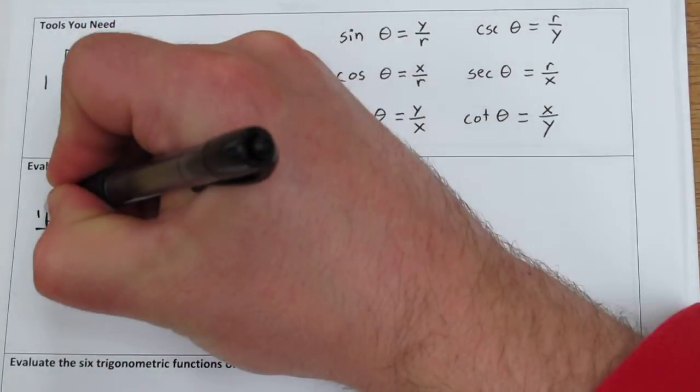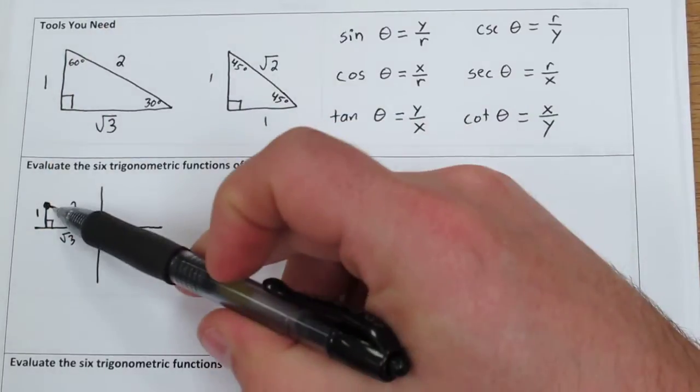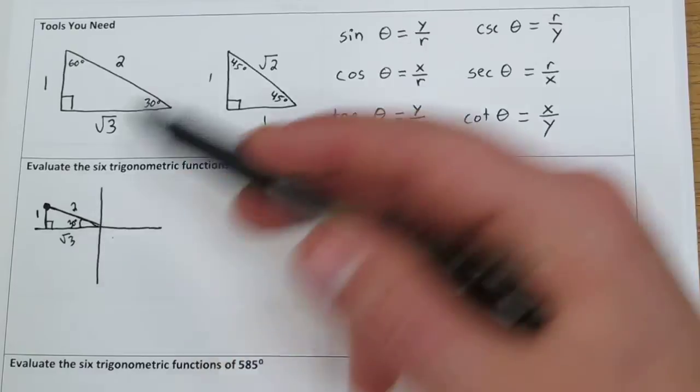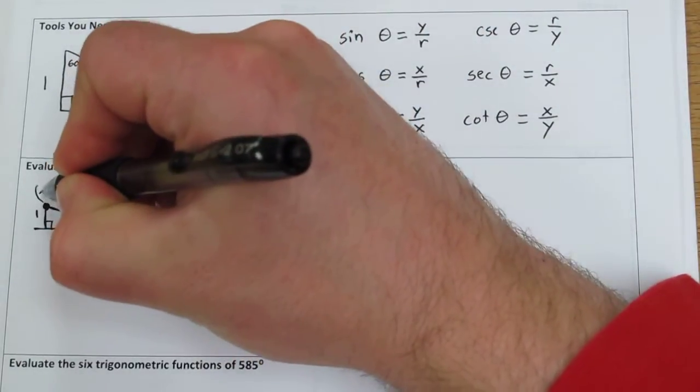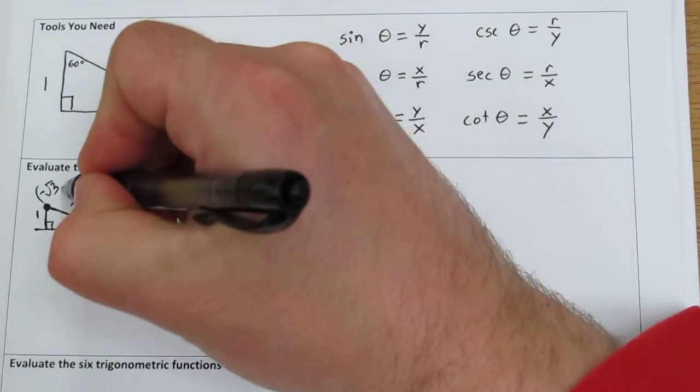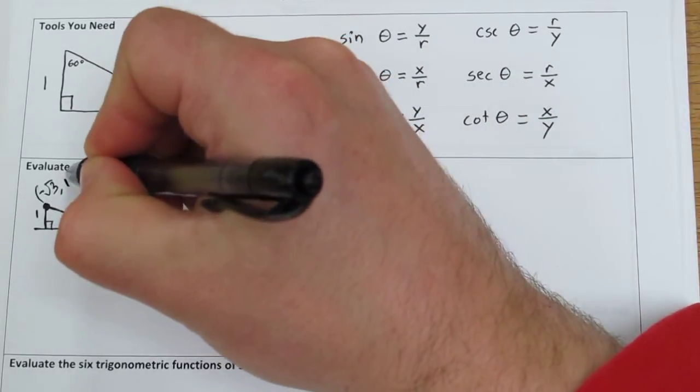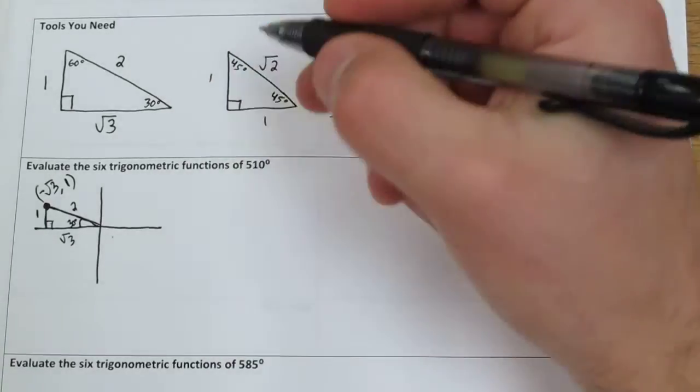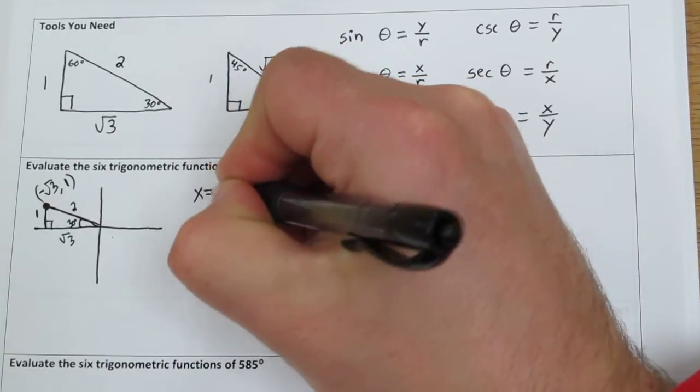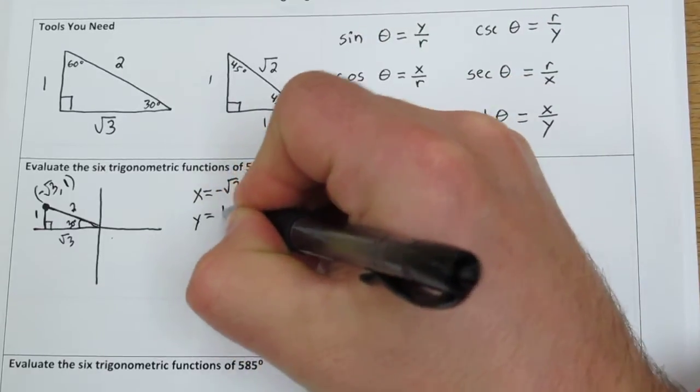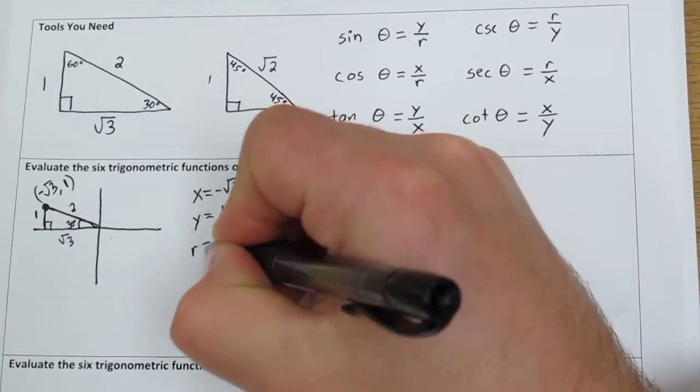Right here, the coordinates of this point in this quadrant, since we're rad 3 over, the x coordinate would be negative rad 3. And since we're 1 unit up, the y coordinate would be positive 1. So x is negative rad 3, y is 1, and r is 2.